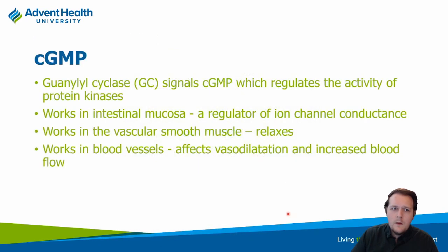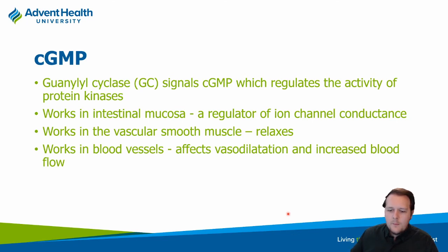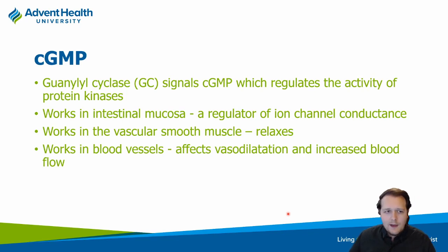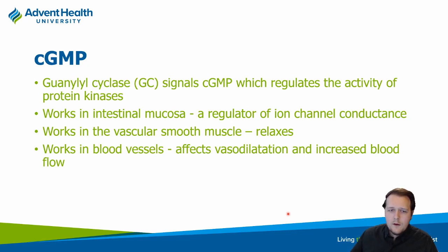Cyclic GMP is responsible for a different set of actions, particularly modulating smooth muscle contraction and relaxation. Smooth muscle is found in the eyes, blood vessels, and GI tract. Similar to how adenylate cyclase produces cyclic AMP, guanylate cyclase produces cyclic GMP. Once cyclic GMP is formed, it alters the ability of calcium to enter cells, changing how tightly the muscle contracts or relaxes.